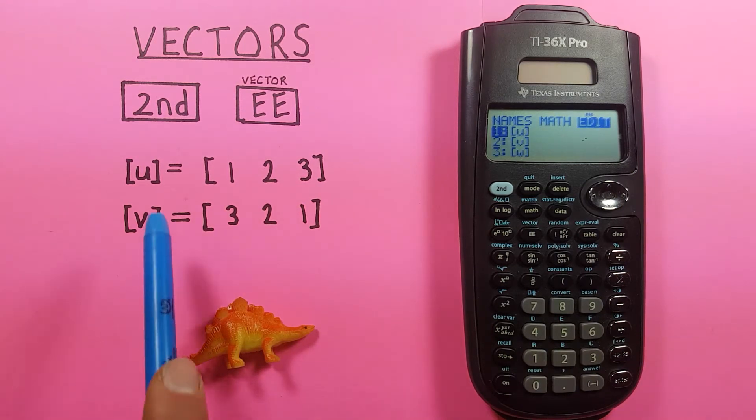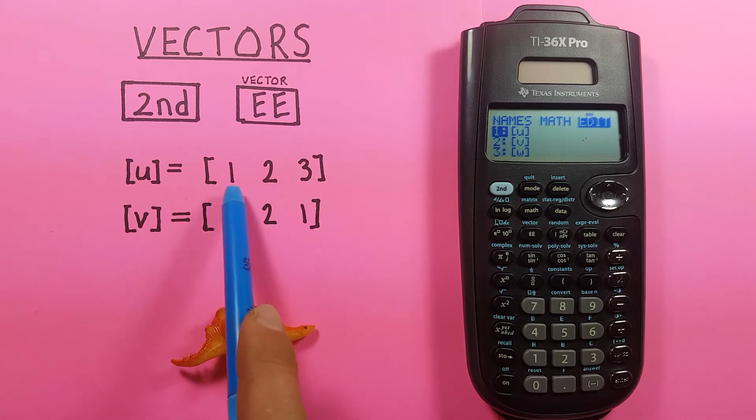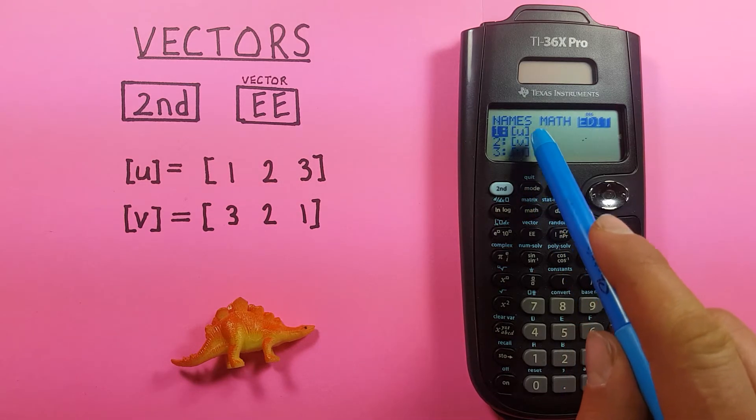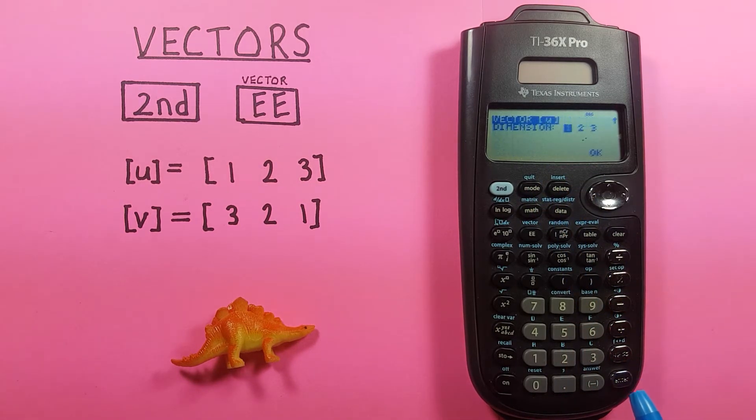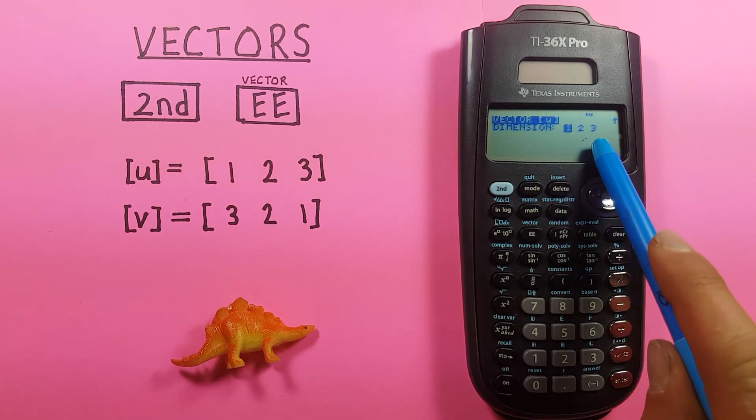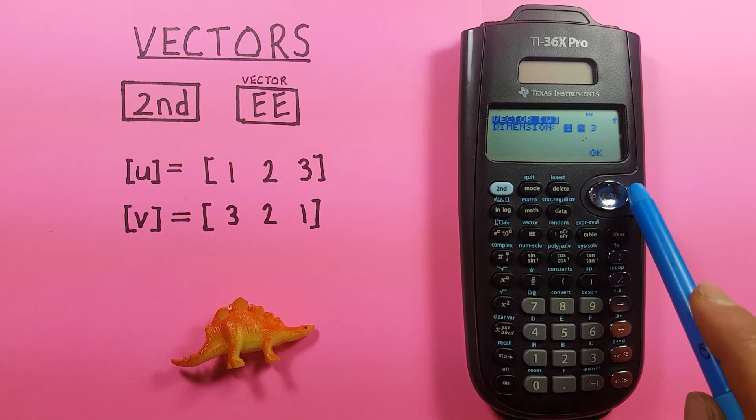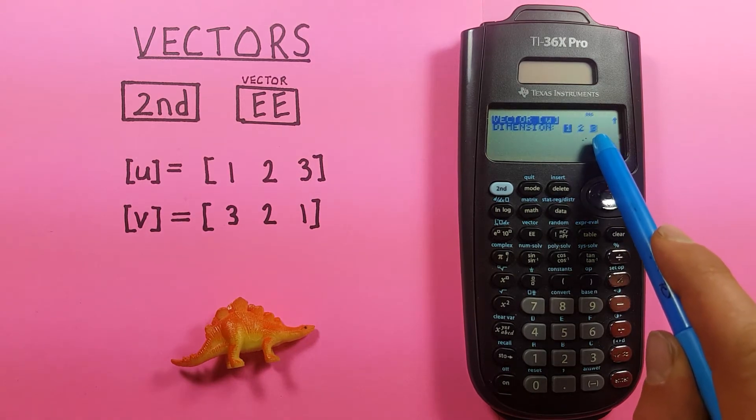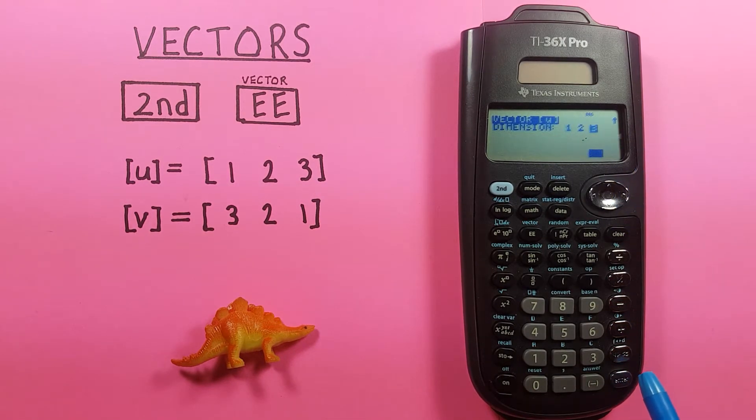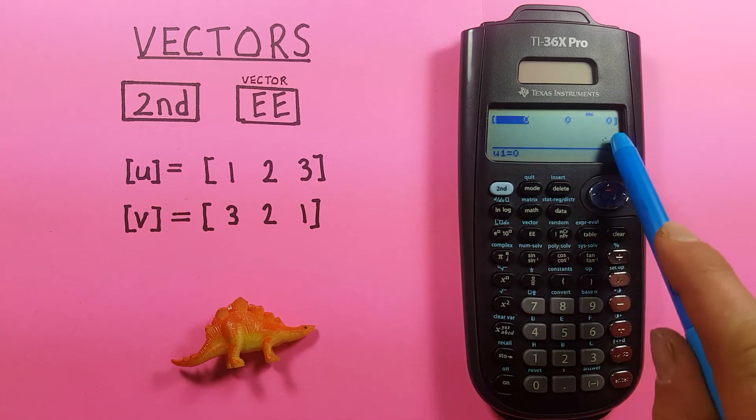You can see here we have two three-dimensional vectors U and V. So if we want to define our vectors, we'll highlight number one U, press enter. It brings us to this menu asking us how many dimensions we want. Well, we're doing three, so we'll move over to the three, highlight it, and press OK once. Now it's highlighting the OK, we'll press it again.